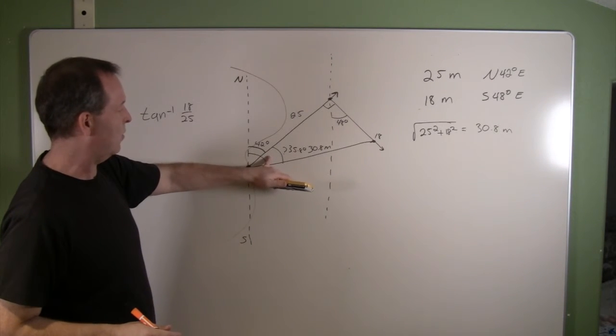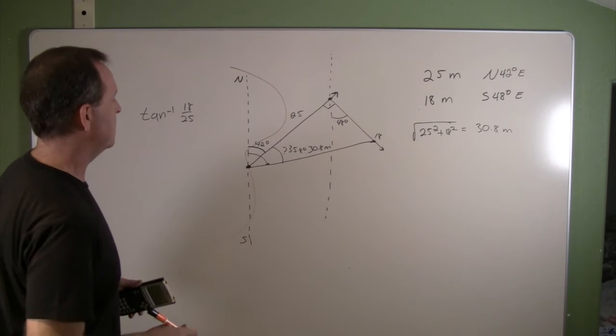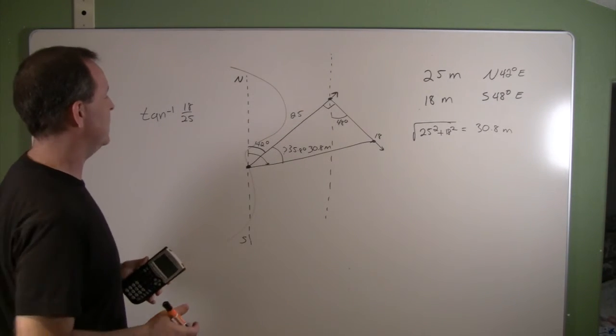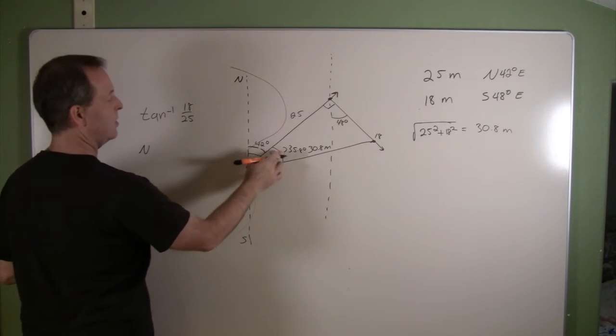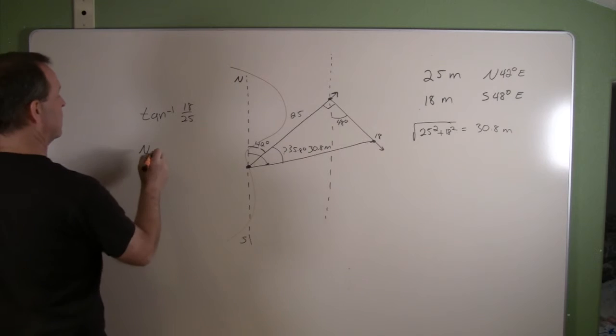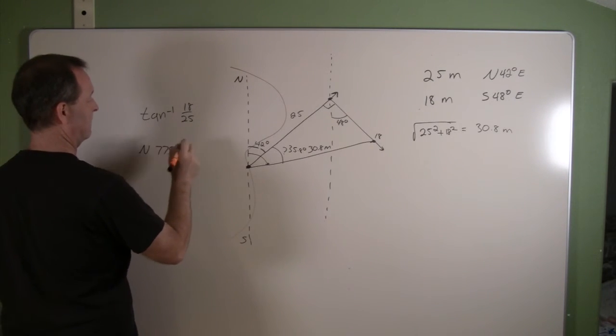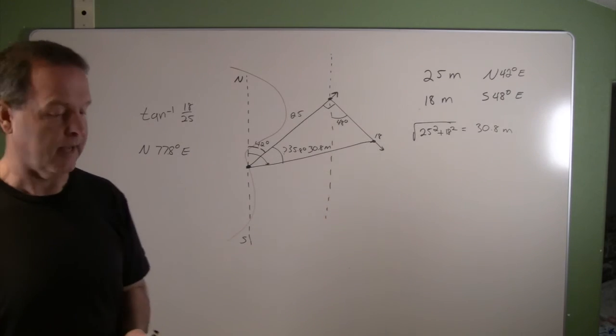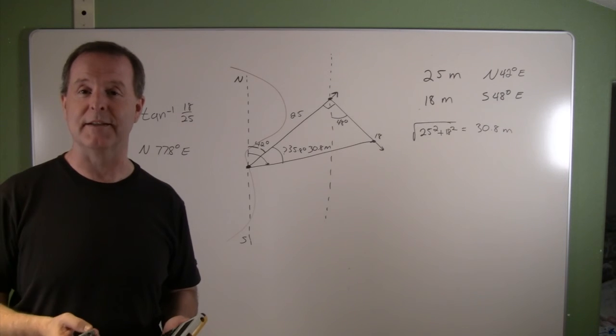Now I know that this angle right here is 35.8 plus the original 42. So I can say that his new position is north 42 plus 35.8, which is 77.8 degrees east. That's the information that I was curious about and it was the information I was able to find.